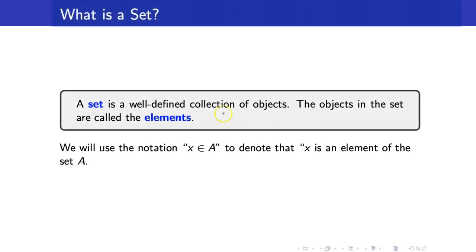A set is a well-defined collection of objects. The objects in the set are called the elements, and we use the notation 'x is an element of A' to denote that x is a member of the set A. What do we mean by the word well-defined? It only means that we can determine whether an object belongs to a set or not.